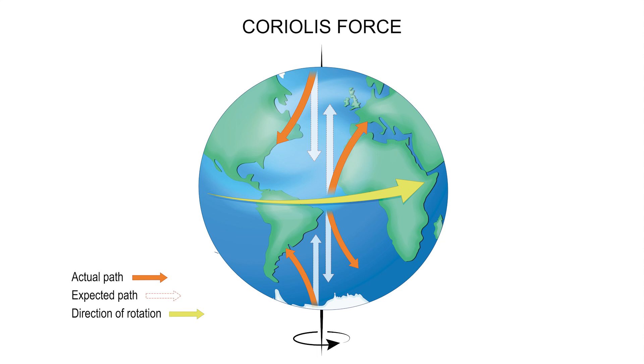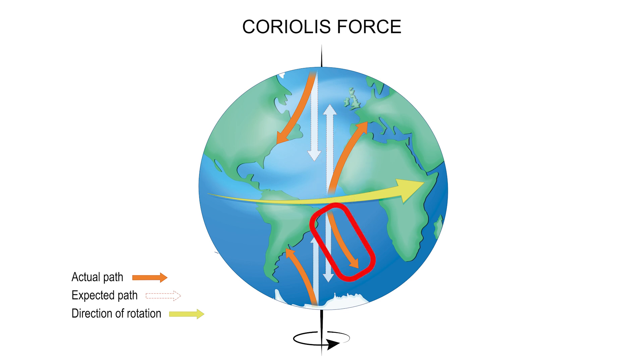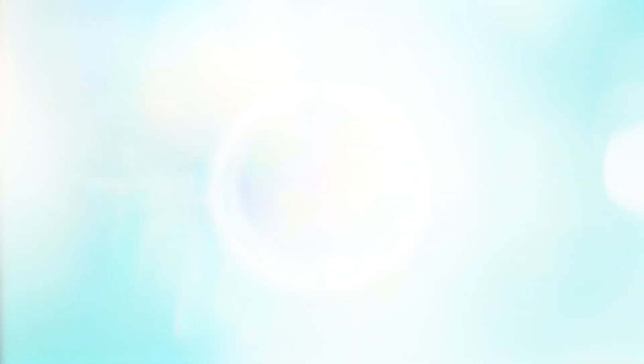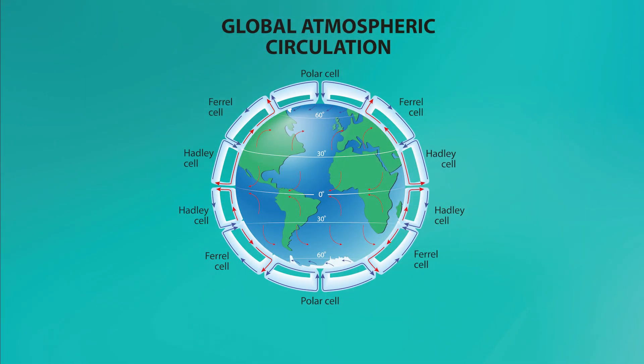Imagine you are standing at the equator while the Earth rotates. In the Northern Hemisphere, the wind is deflected to the right, and in the Southern Hemisphere, it's deflected to the left. So wind belts in the atmosphere are impacted by convection currents, varying amounts of direct sunlight, and the rotation of the Earth deflecting the wind and causing it to curve.